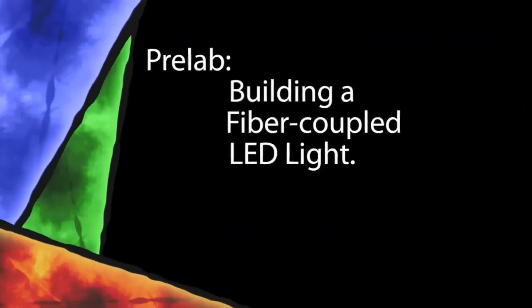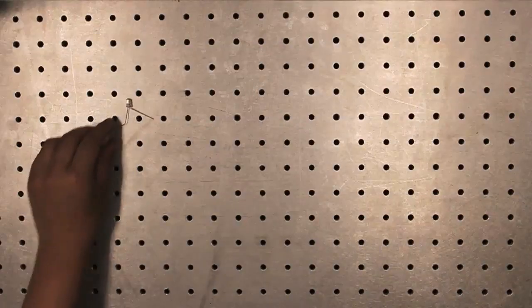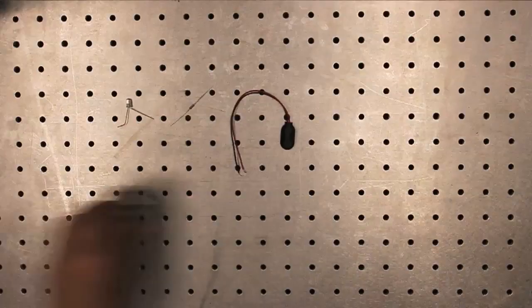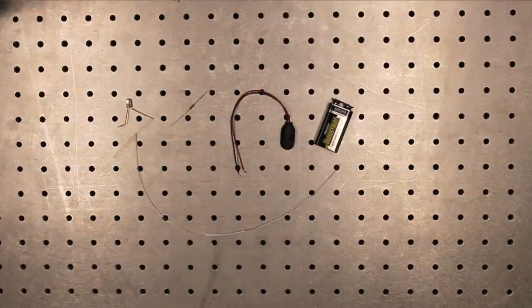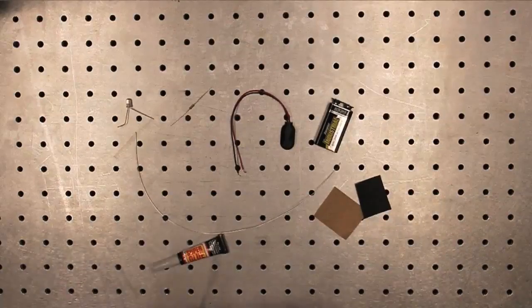Let's begin with the pre-lab, building a fiber coupled LED light. The components of the pre-lab include a super bright white light LED, a 200 ohm resistor, a battery strap and a 9 volt battery, a piece of multi-mode fiber, some sandpaper, epoxy or glue and a stick for application.